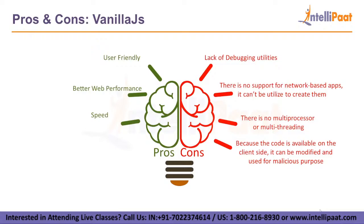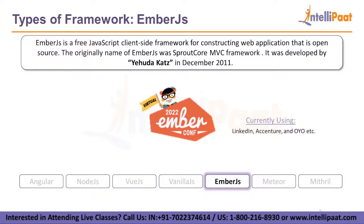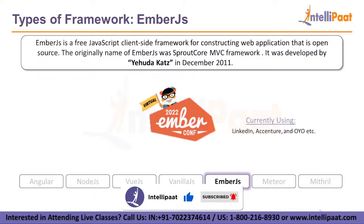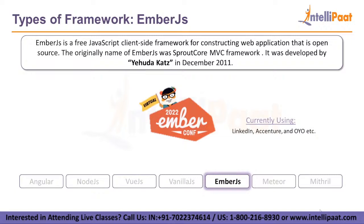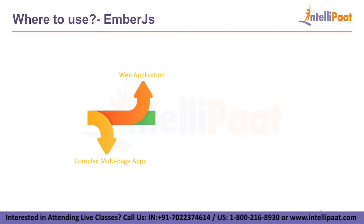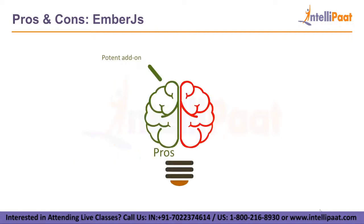Now, another framework — Ember.js. Ember.js is a free, open-source, client-side JavaScript framework for constructing web applications. It enables the development of comprehensive solutions including data management and application flow. The original name of Ember.js was SproutCore MVC Framework. It was developed by Yehuda Katz and was initially released in December 2011. Companies currently using it include LinkedIn, Accenture, and Oyo. It can be used for complex multi-page applications and web applications.